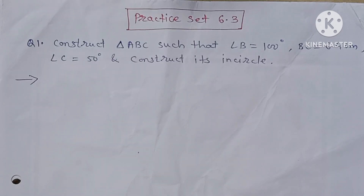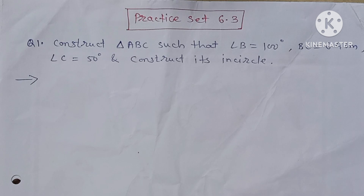Construct triangle ABC such that angle B is equal to 100 degrees, BC is equal to 6.4 cm, angle C is equal to 50 degrees, and construct its incircle. So we will draw the rough figure.